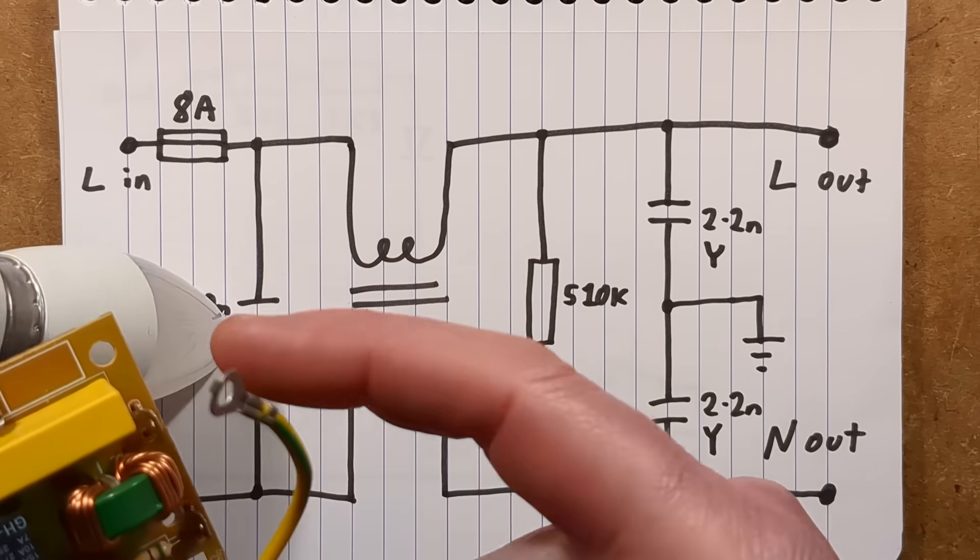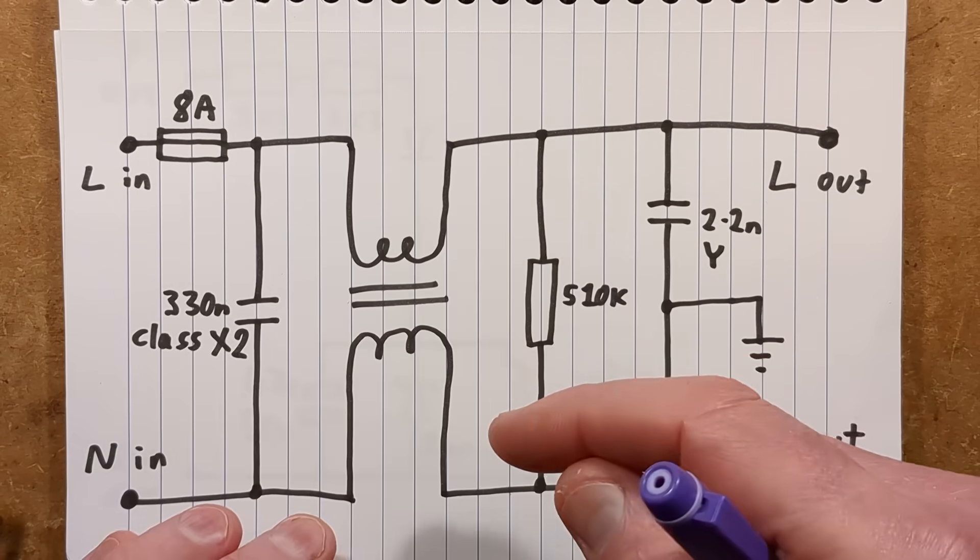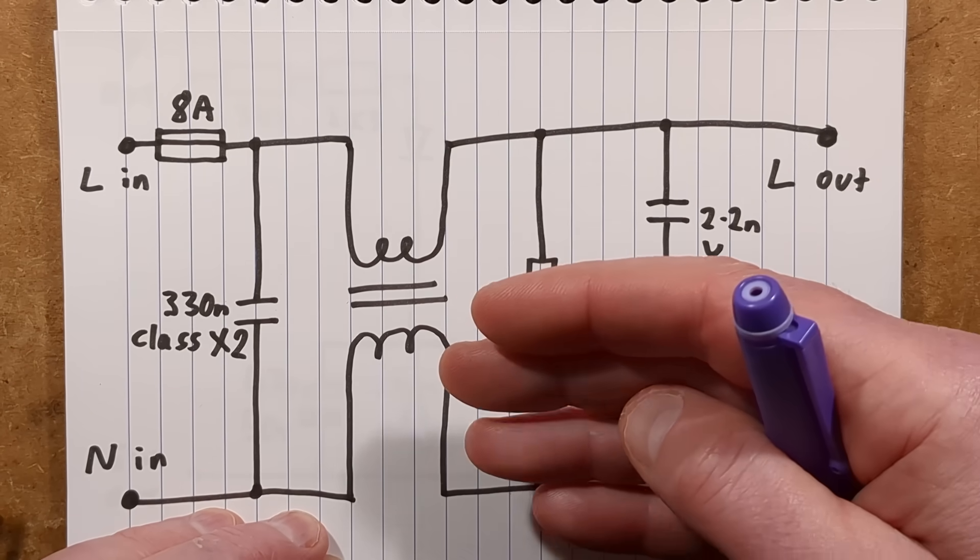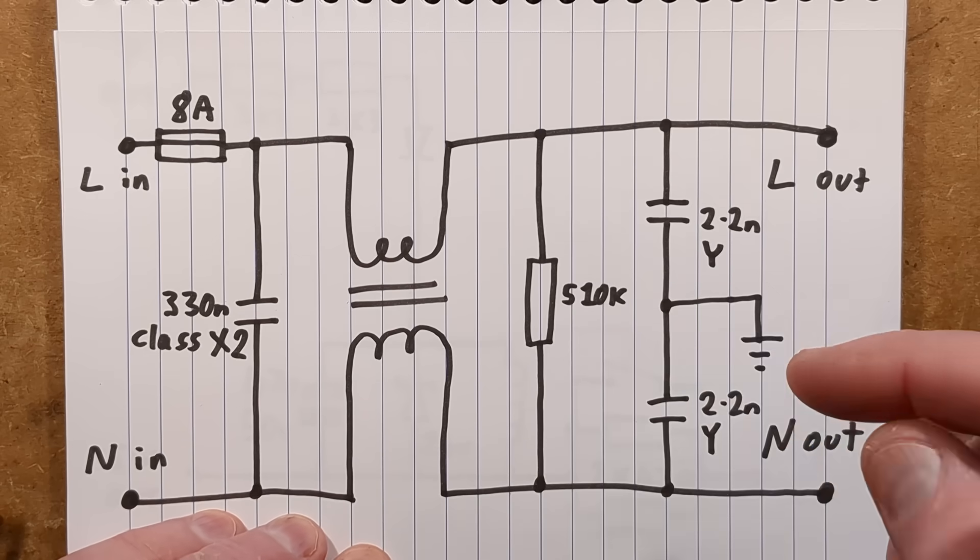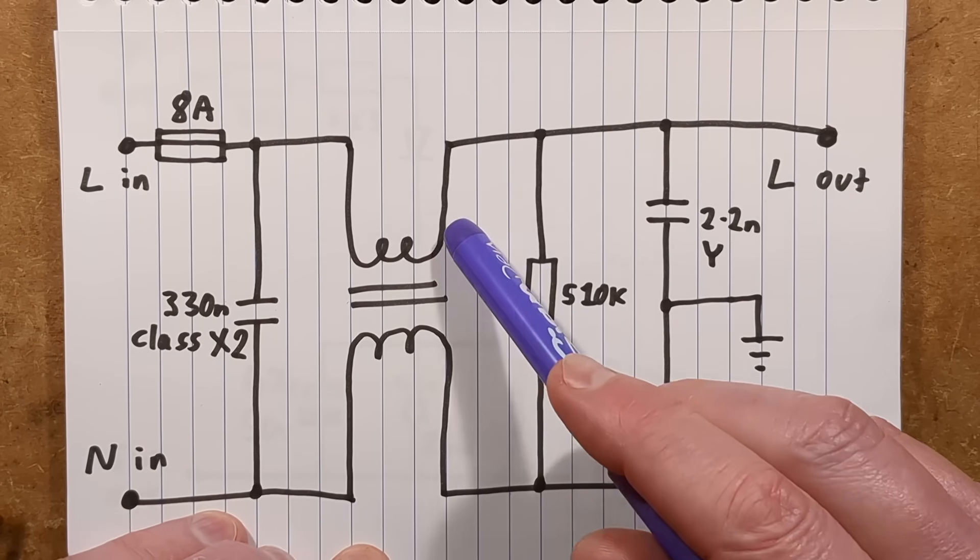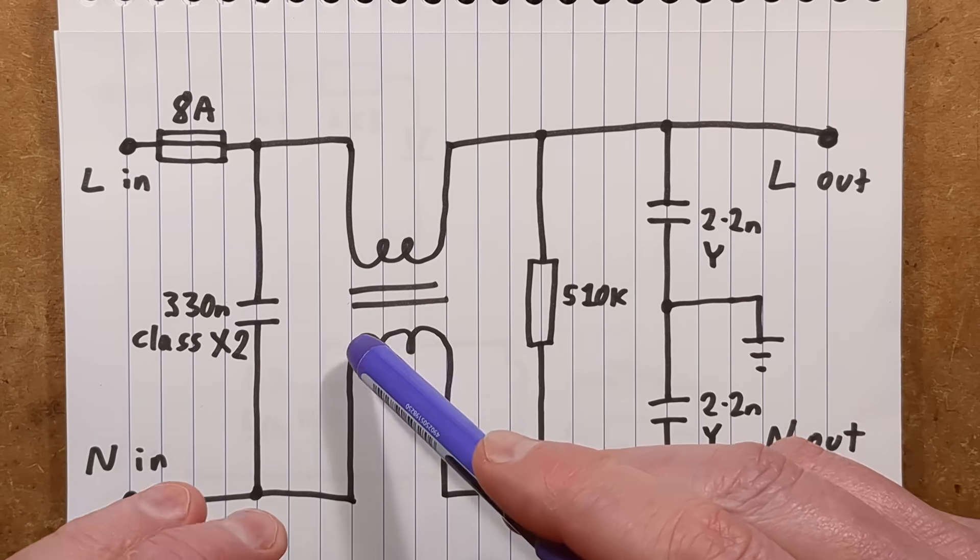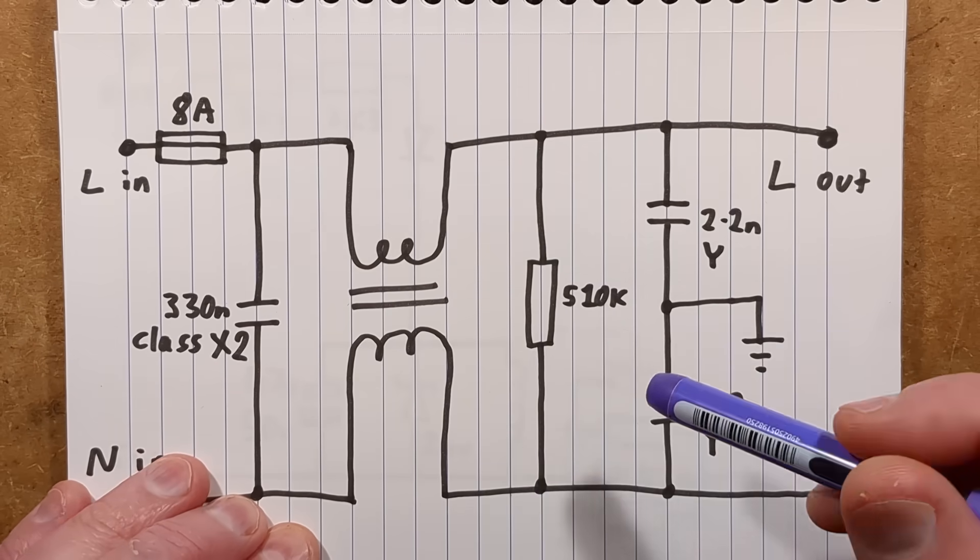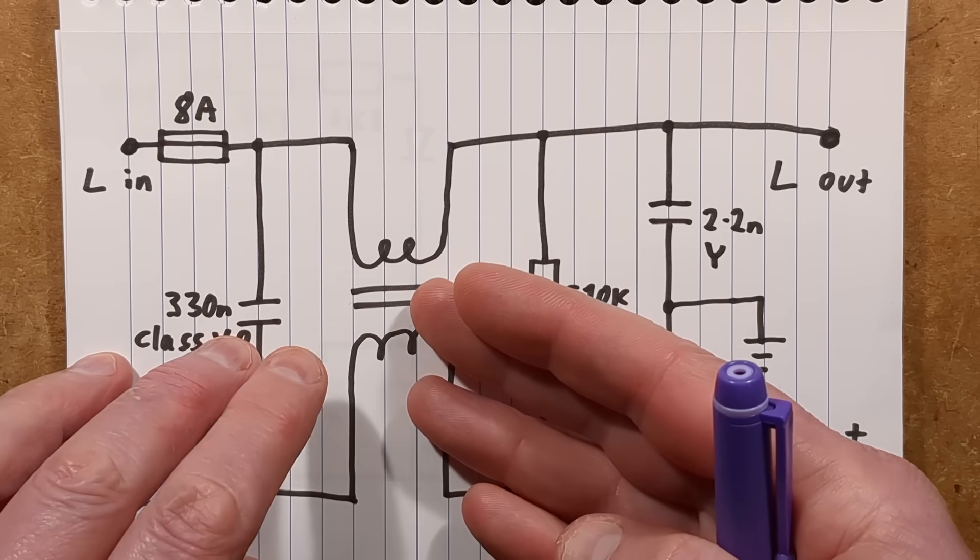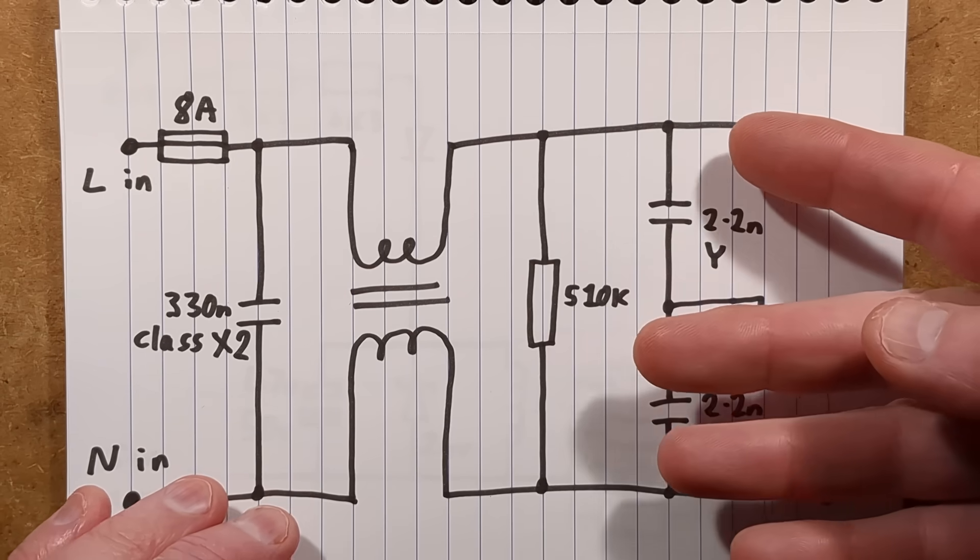We've got the 330 nanofarad class X2 capacitor. The class X2 are designed for going across the mains. That's this big yellow capacitor here. They are designed for connecting directly across the mains. They are self-healing, what that means is that if the separator inside punctures it will blow itself clear. Then we've got the common mode suppression choke. That's this toroid choke here, and it's got two windings on a common circular core.